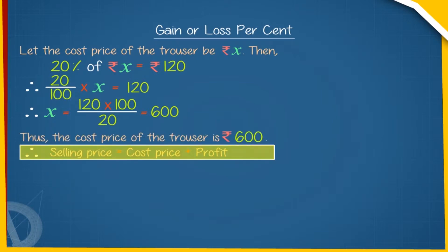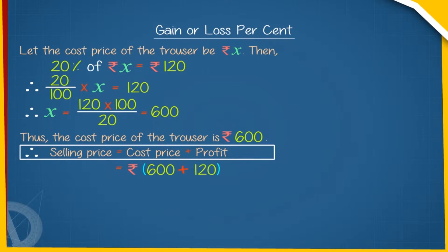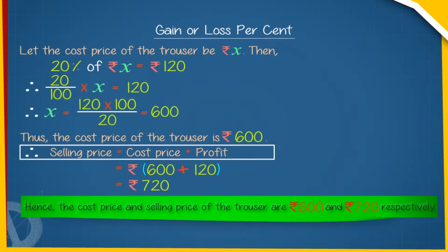Therefore, selling price equals cost price plus profit equals Rs. 600 plus Rs. 120 equals Rs. 720. Hence, the cost price and selling price of the trouser are Rs. 600 and Rs. 720 respectively.